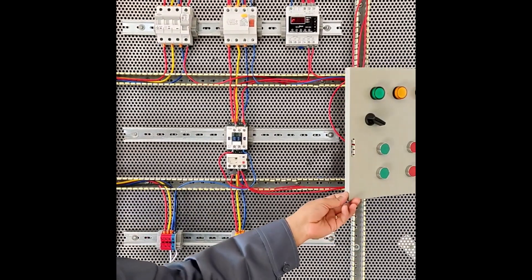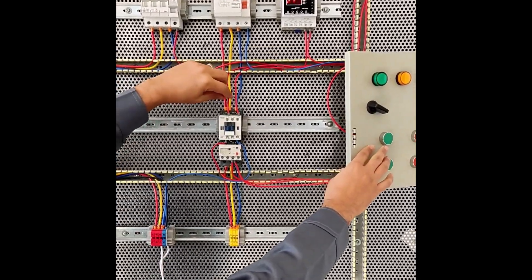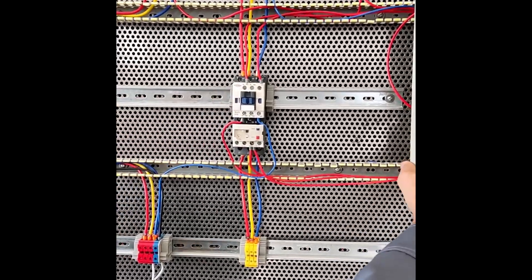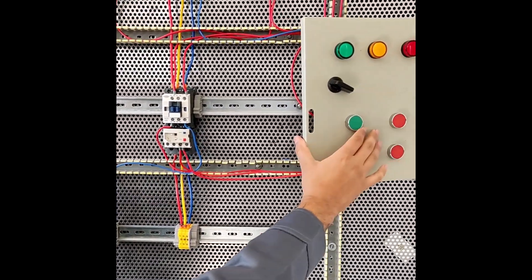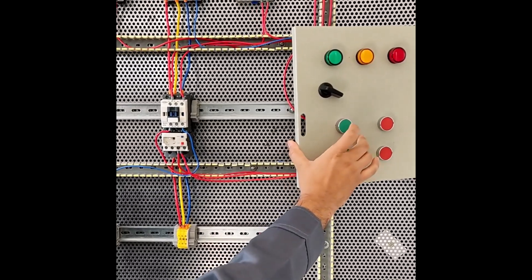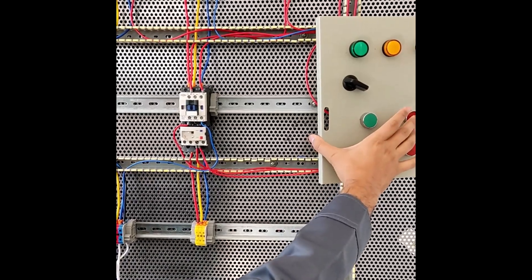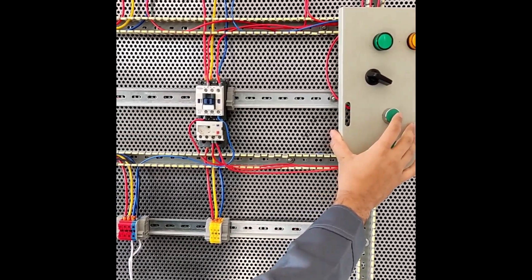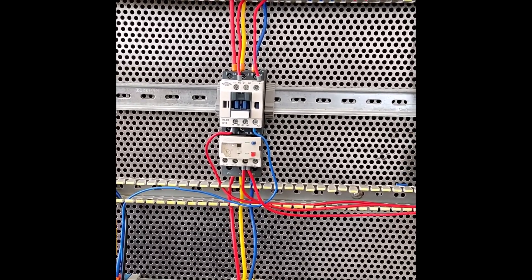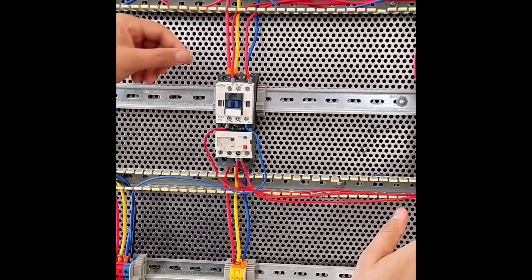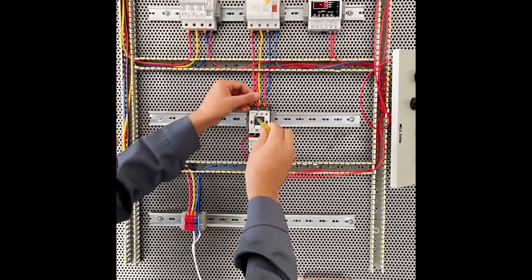By using a starter, we start the circuit in permanent mode because 13 and 14 contactors are connected. We can reset using stop. When we press the start key, it remains in permanent mode. When we press the stop key, it goes out of permanent mode and the engine turns off.